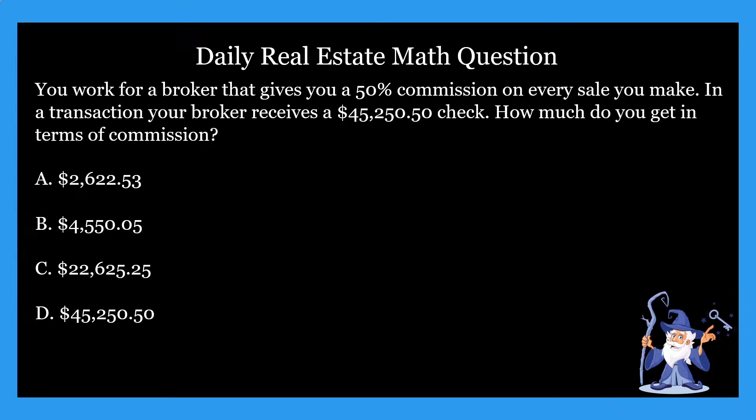So it says: you work for a broker that gives you a 50% commission on every sale you make in a transaction. Your broker receives a $45,250.50 check. How much do you get in terms of commission? It gives you four options. You're going to have to figure out how much you got in terms of commission. I'm going to give you guys an opportunity to figure it out and do the math here. Feel free to pause and go ahead and do that right now.